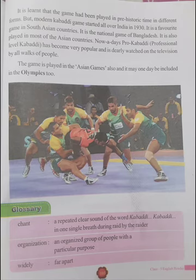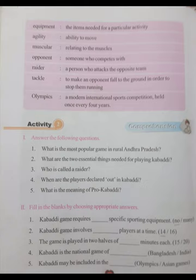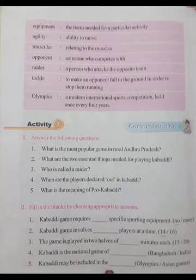Class 5 English, Lesson 7: Textual questions and answers. Glossary: chant - a repeated clear sound of the word 'kabari kabari' in one single breath during a raid; organization - an organized group of people with a particular purpose; widely - far apart; equipment - the items needed for a particular activity; agility - ability to move; muscular - relating to the muscles; opponent - someone who competes; raider - a person who attacks the opposite team; tackle - to make an opponent fall to the ground in order to stop them running; Olympics - a modern international sports competition held once every four years.